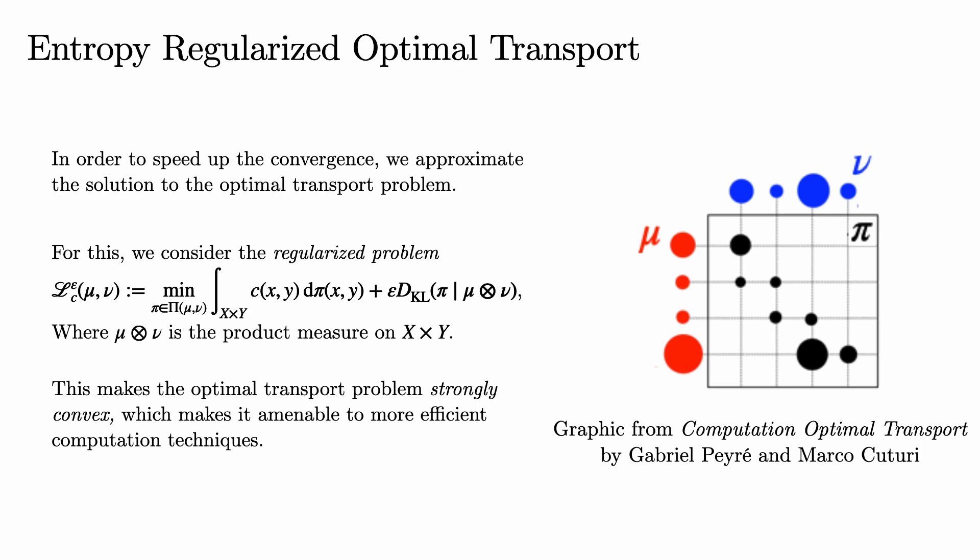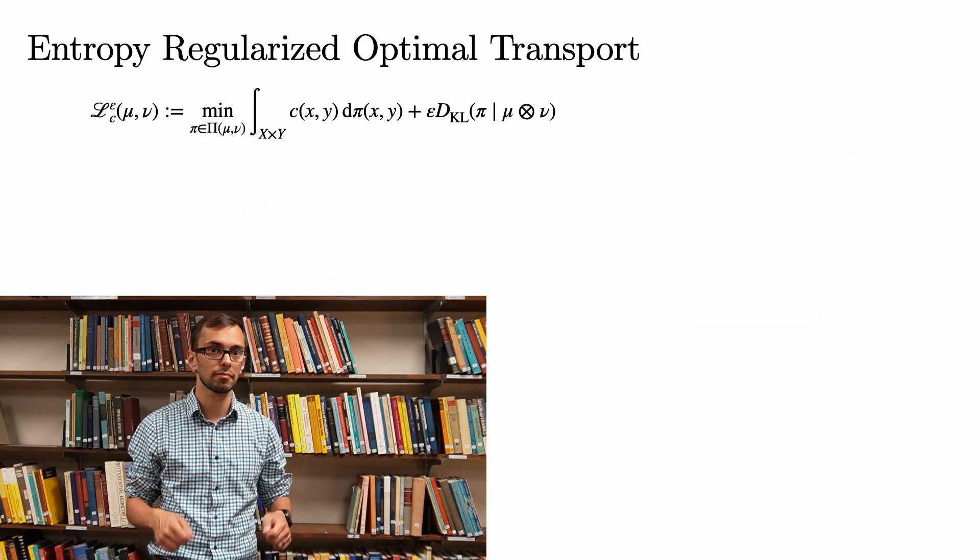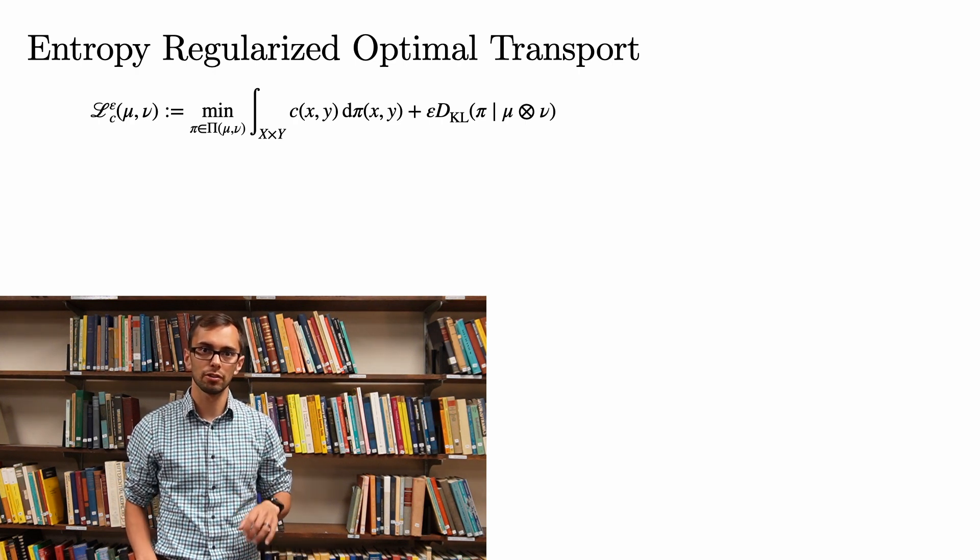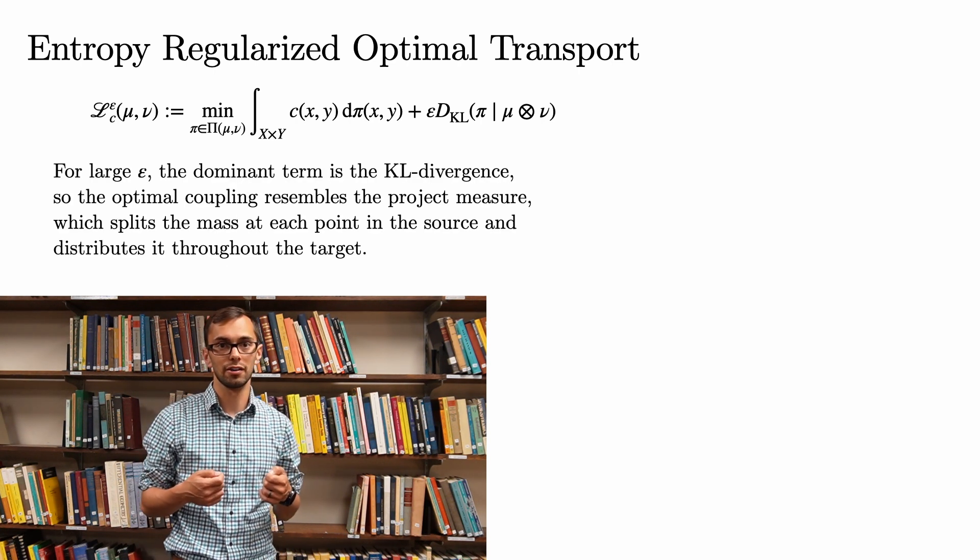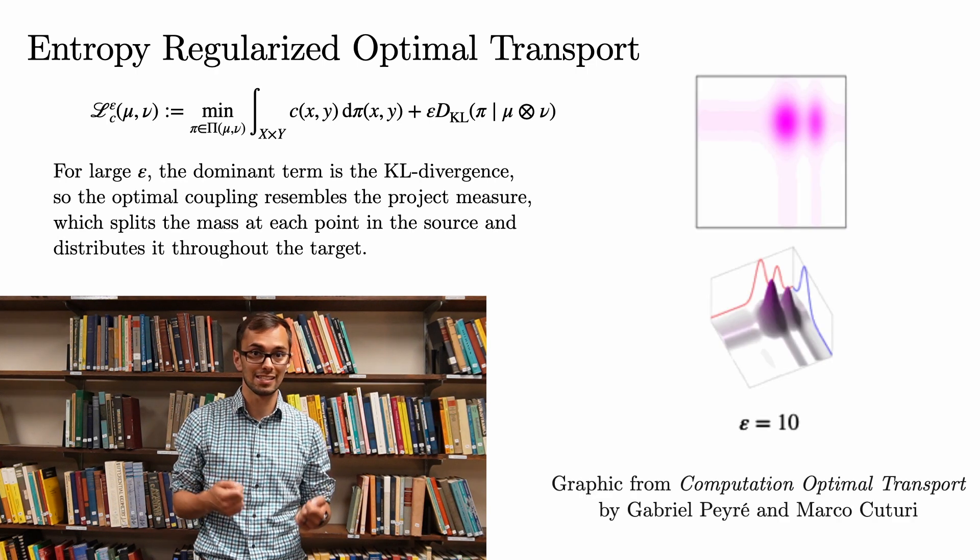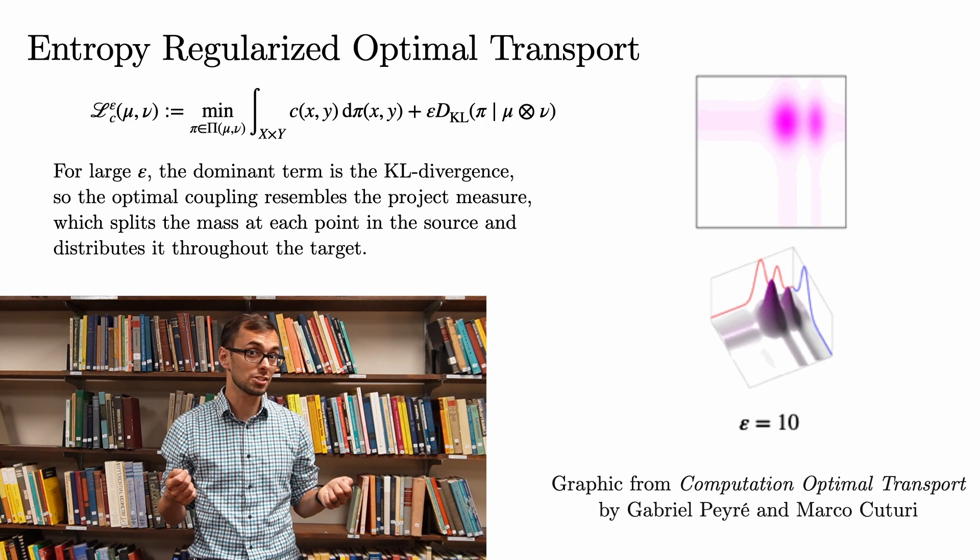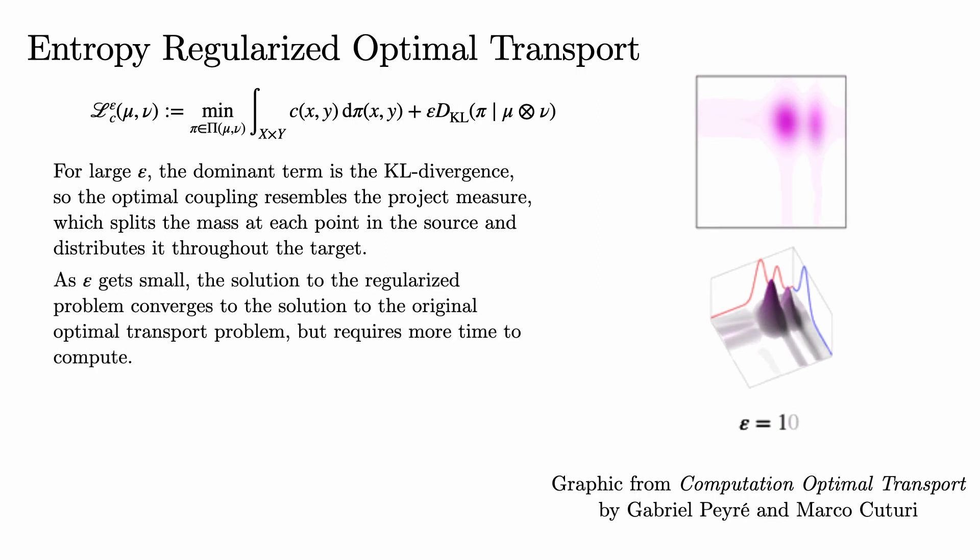In order to explain the effect this extra term has on the problem, it is worthwhile to consider what happens when epsilon is either really large or really small. This is covered in detail in Gabriel Peyré and Marco Cuturi's recent book on computational optimal transport, which is an excellent resource and is available online for free on the arXiv. When epsilon gets really large, the dominant term of this expression is the KL divergence. So the optimal coupling is essentially just the product measure, which splits the mass at each point in the source and distributes it throughout the target. However, as epsilon gets smaller, the solution to the regularized problem converges to the solution to the original optimal transport problem in the weak star sense. However, the solution requires more time to compute, so there's no free lunch.